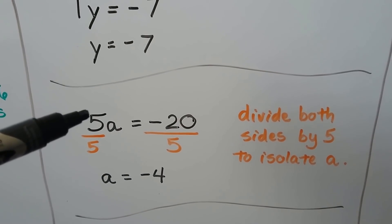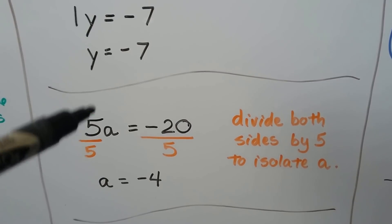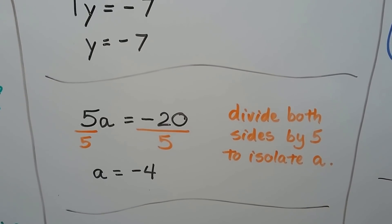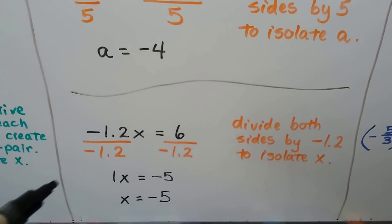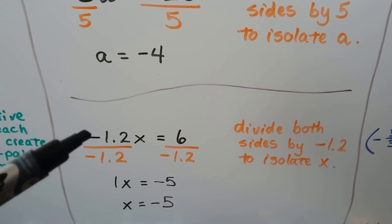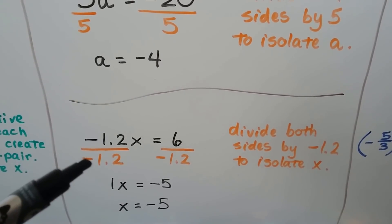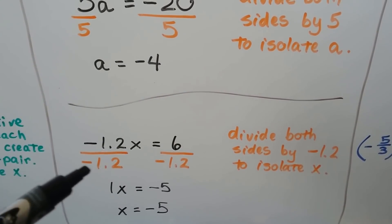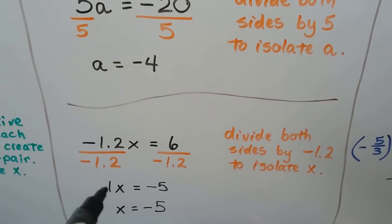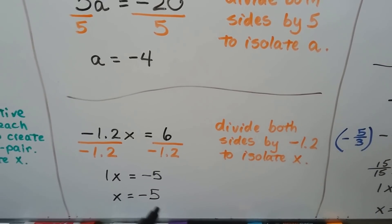Here we have positive 5a equals negative 20. We divide both sides by the positive 5 coefficient, we get a 1, and negative 20 divided by 5 is negative 4. We isolated a to equal negative 4. Same with decimals: negative 1.2x equals 6 — divide both sides by negative 1.2. The negative sign comes with it, giving us 1x, which is just x. 6 divided by negative 1.2 is negative 5, so x equals negative 5.